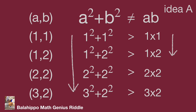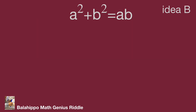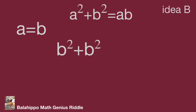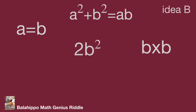Let's think another way — we call it Idea B. In the given equation a squared plus b squared equal to ab, first we assume a equals b. Substituting a with b: a squared plus b squared becomes b squared plus b squared, which equals 2b squared, while ab equals b times b equals b squared. So a squared plus b squared equals 2b squared, which is larger than b squared equals ab. Therefore a squared plus b squared is not equal to ab.